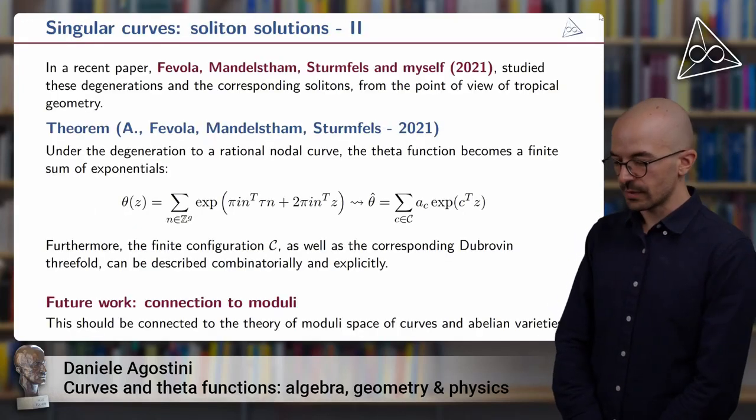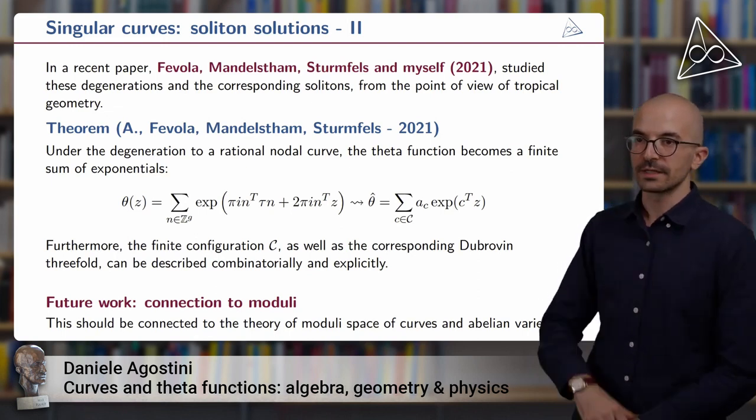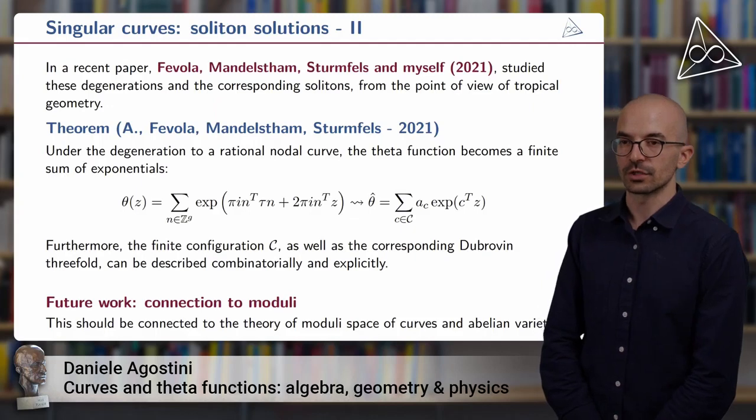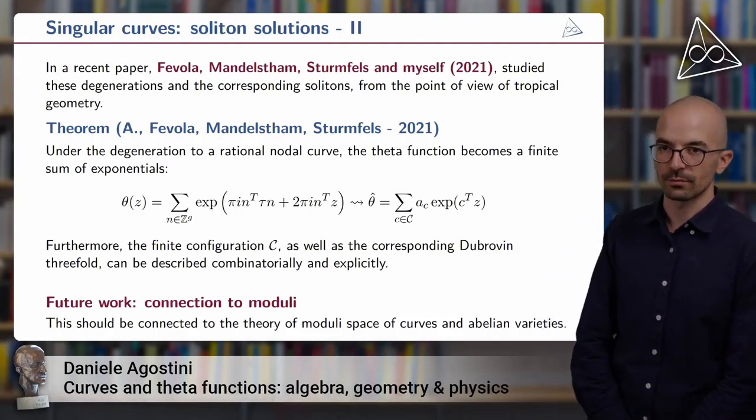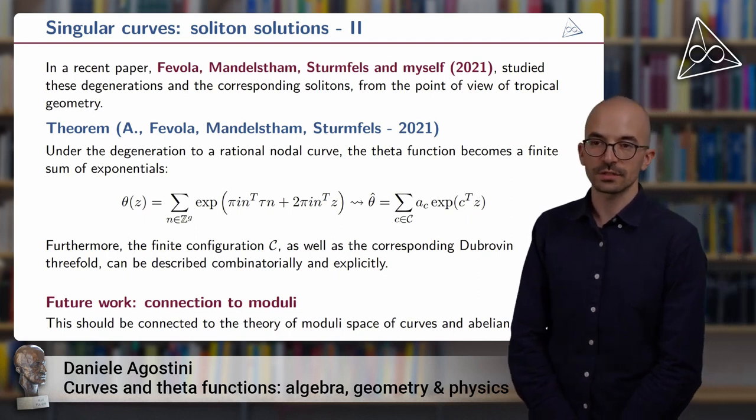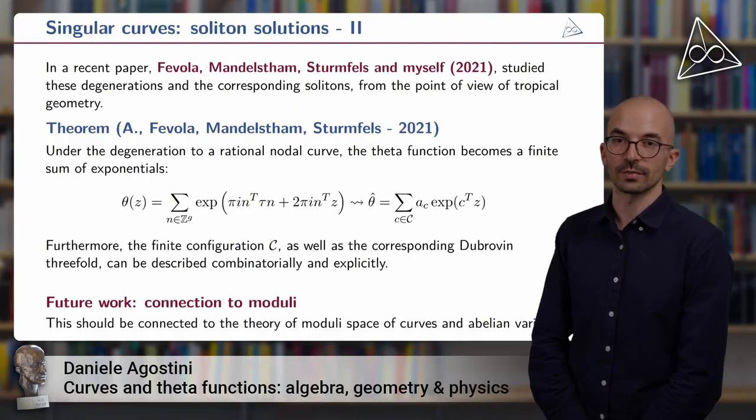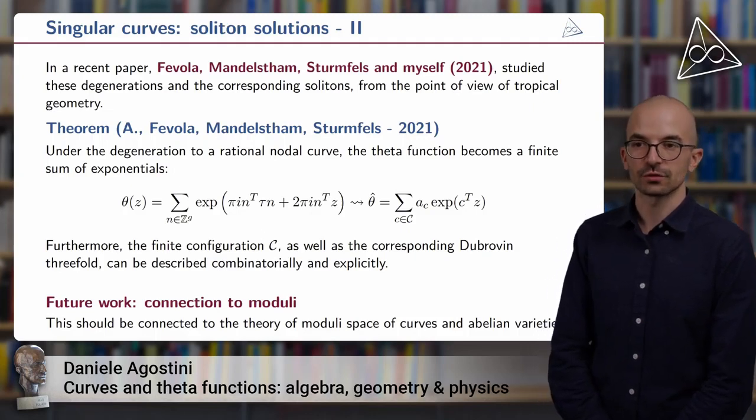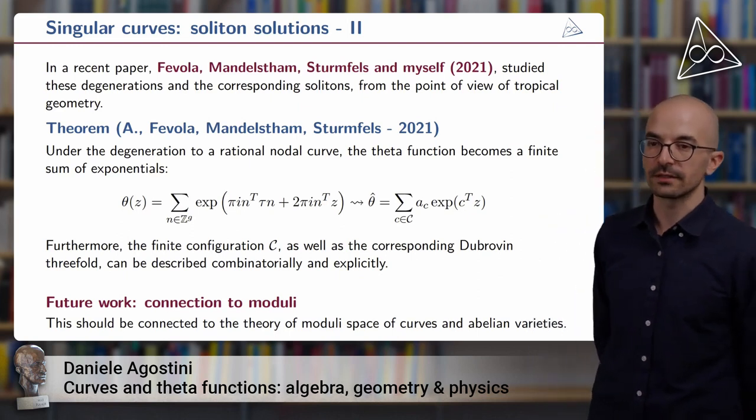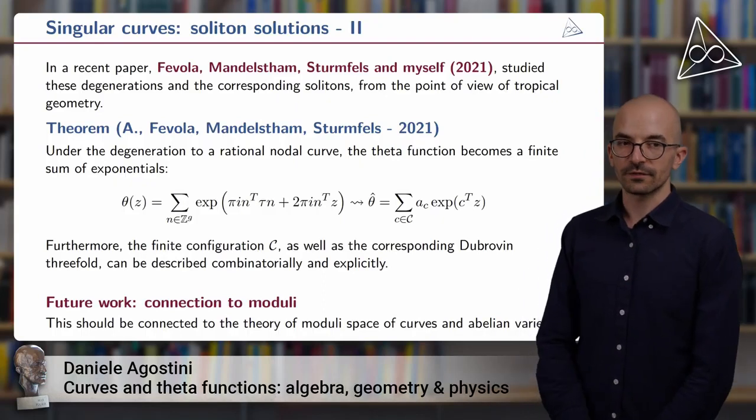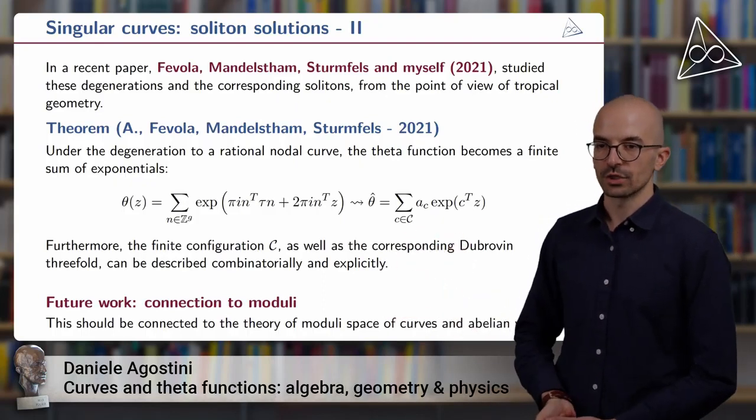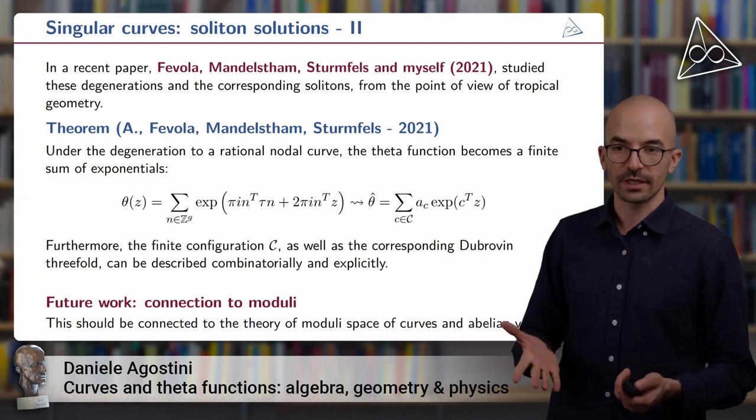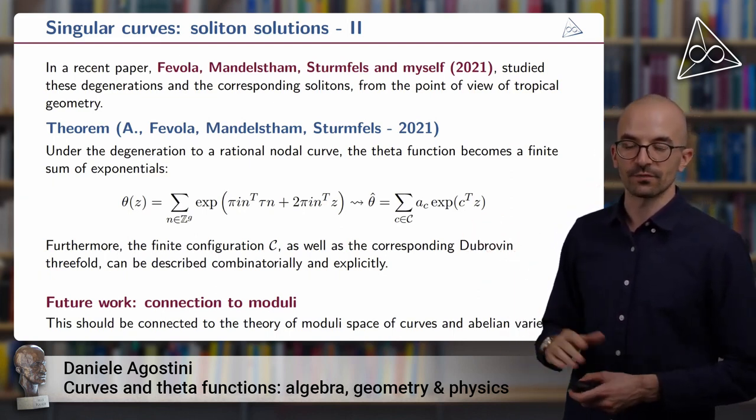Well, for example, how do we see explicitly this degeneration of KP solutions? Well, in a recent paper with Claudia Fevola, she's a member of my group and a PhD student supervised by Bernd Sturmfels and myself, Yelena Mandelshtam, a visiting PhD student from Berkeley, and Bernd Sturmfels, we studied these degenerations and the corresponding soliton solutions from the point of view of tropical geometry, which is a language particularly well suited for dealing with these kinds of degenerations. Amongst other things, we show that under this degeneration, the theta function for the smooth curve, which is normally an infinite sum of exponentials,